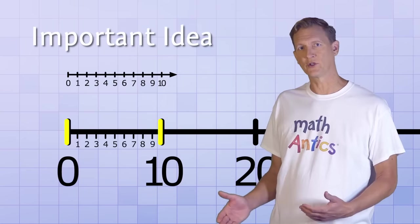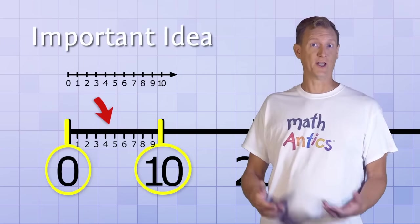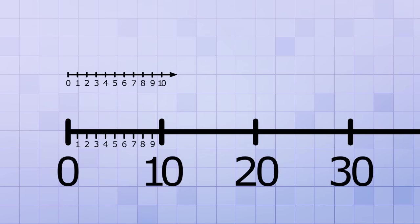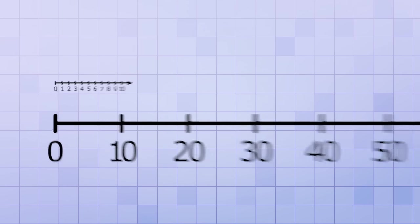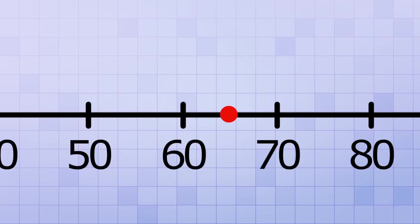Just because a number line has marks showing specific numbers doesn't mean that there's nothing in between them. There's actually a lot in between them, as you'll see in a minute. In this example, the space between the 0 and the 10 on the longer number line still contains all the counting numbers 1 through 9, but for simplicity we left them out. But it's important to remember that they're still there, in case you need to use those in-between values. Like if someone asks you to put a point on the number line where 65 is located, you would put it halfway between the 60 and the 70. That's where 65 is, even though its mark isn't shown.